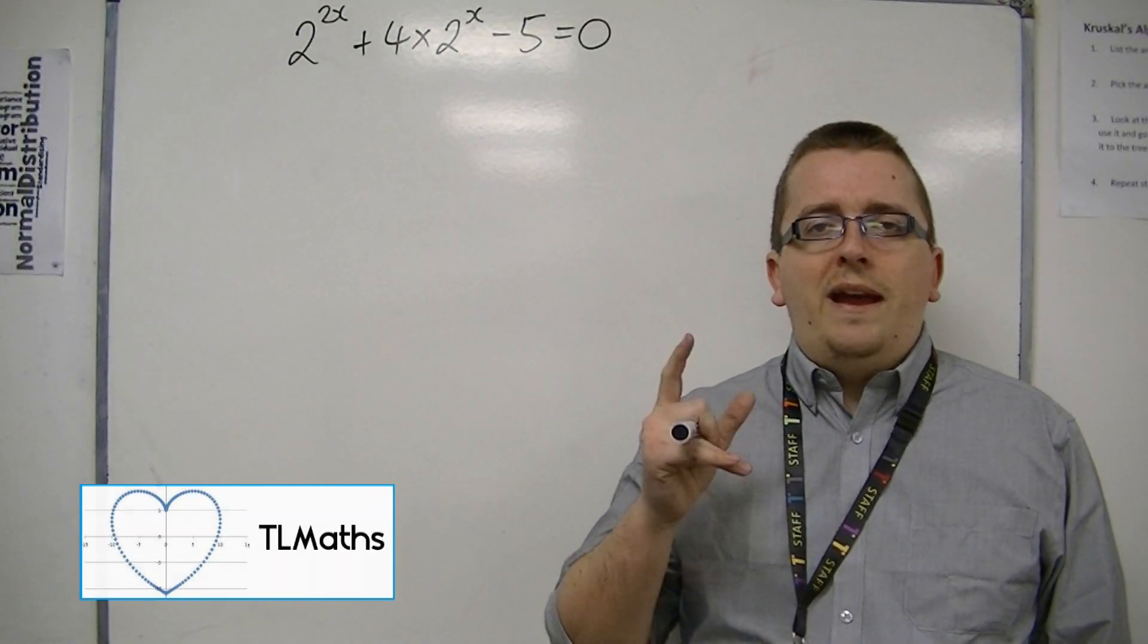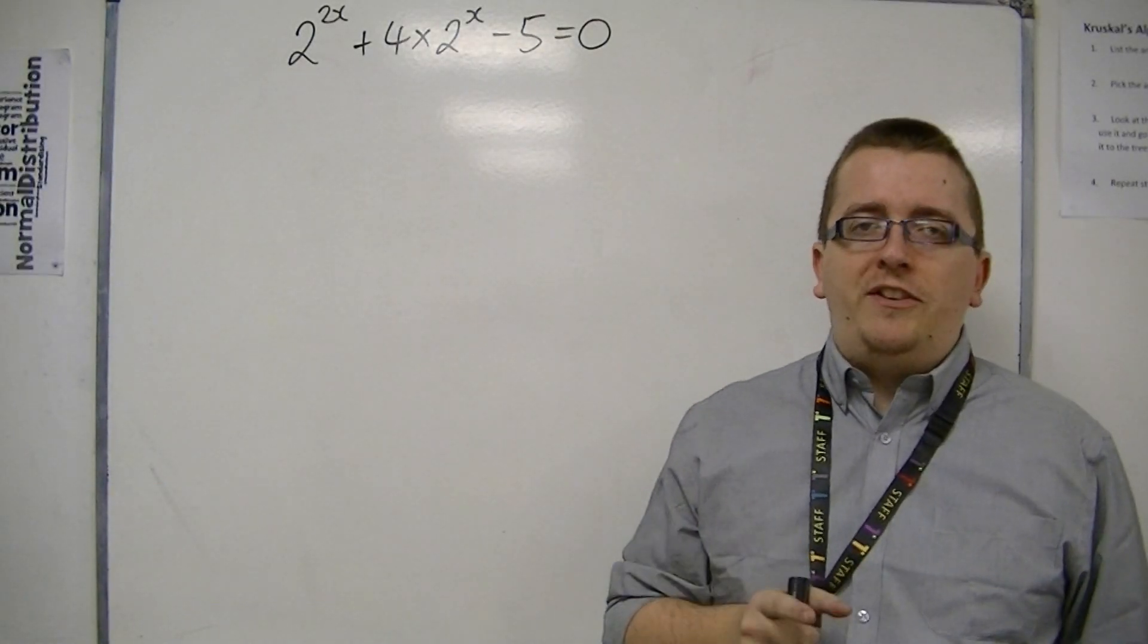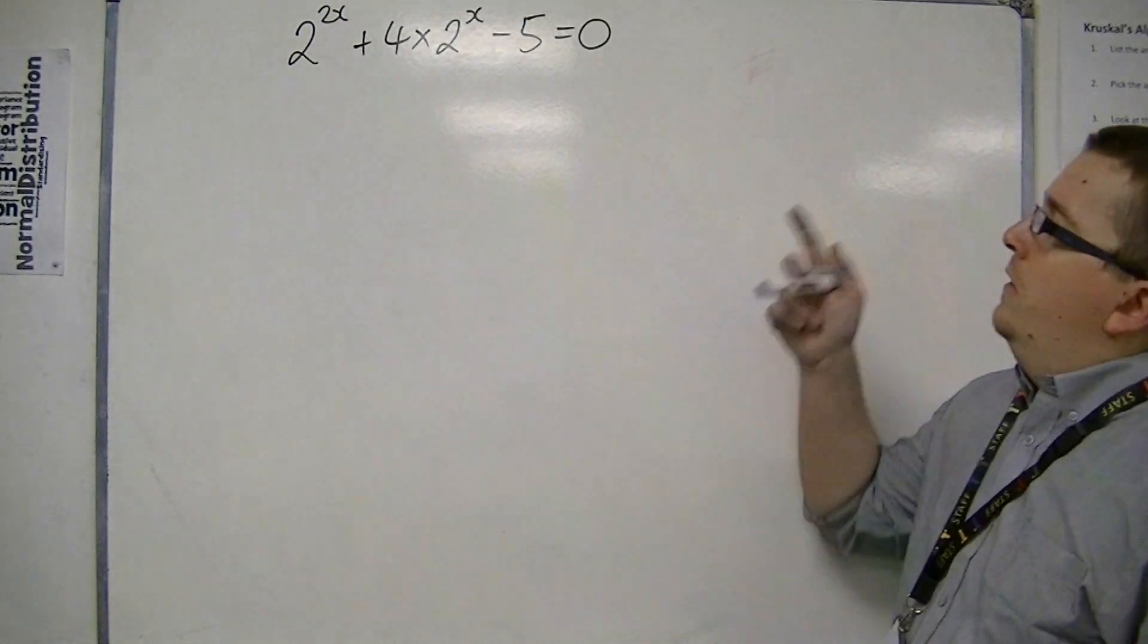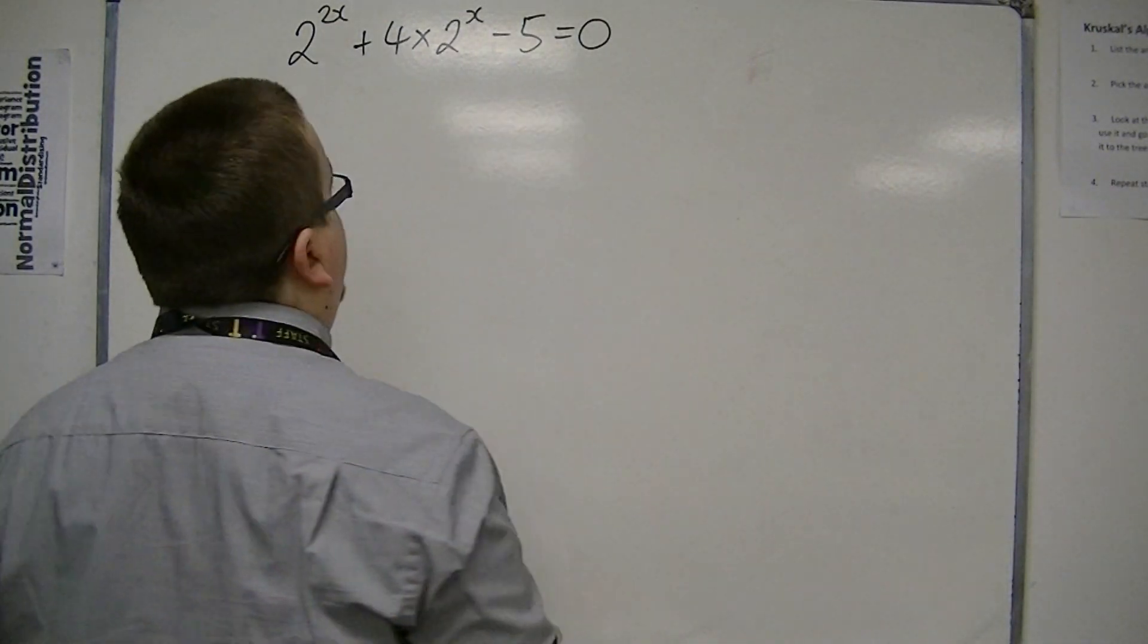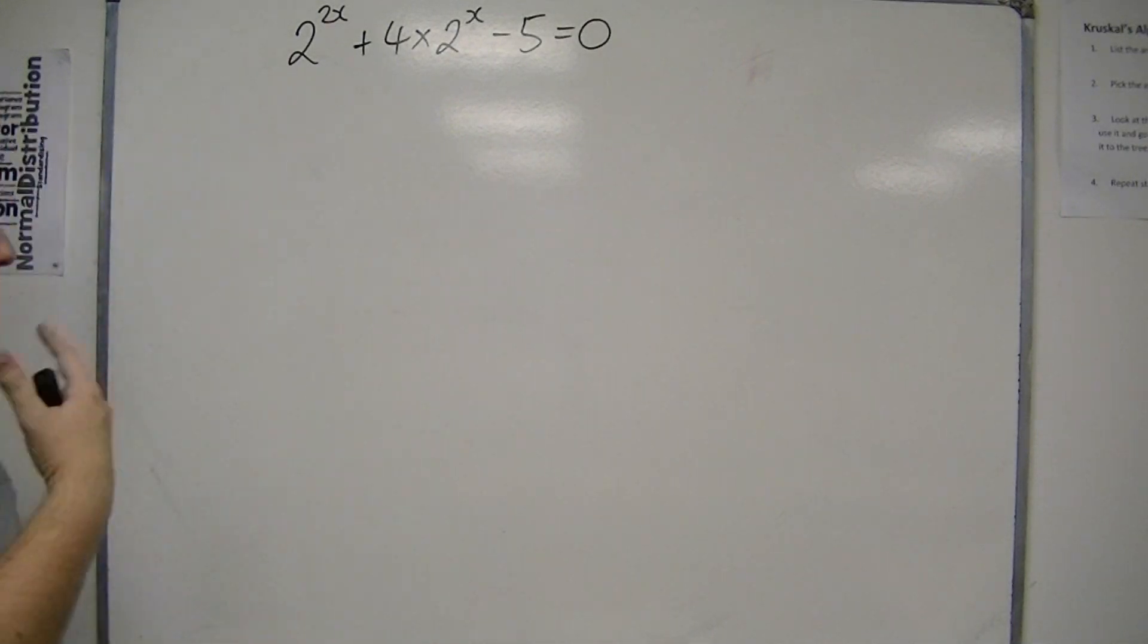In this video, we're going to go through a second hidden quadratic question. So this is the equation that we're going to start with: 2 to the 2x plus 4 times 2 to the x, take away 5, is 0.